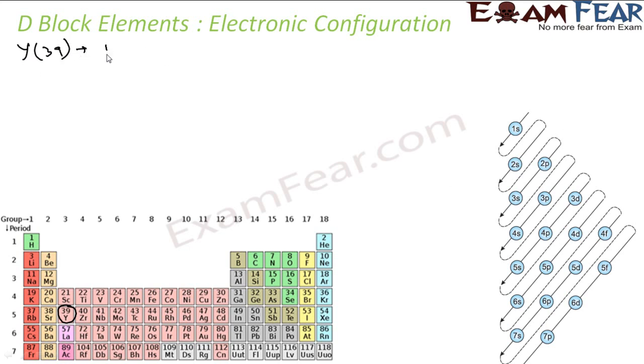1s2, then you have 2s2 2p6, then you have 3s2 and then you have 3p6 4s2 3d10 4p6 actually, it would be 6, and 5s2 and 4d.